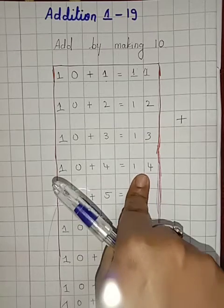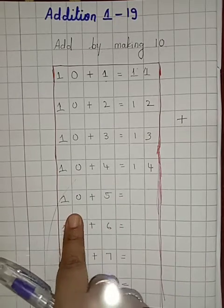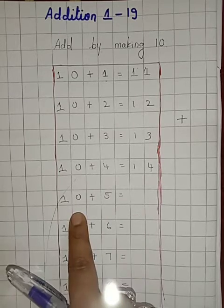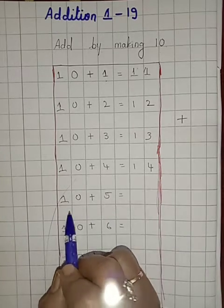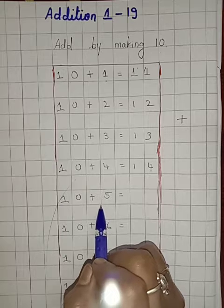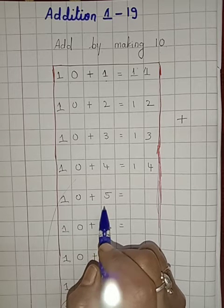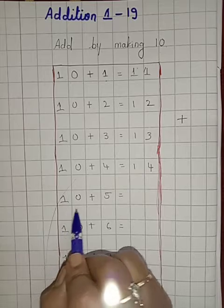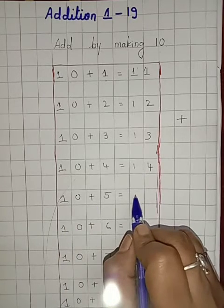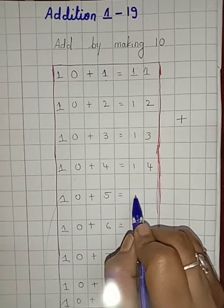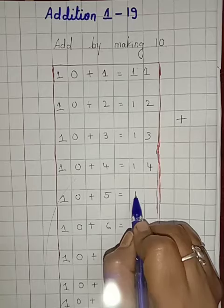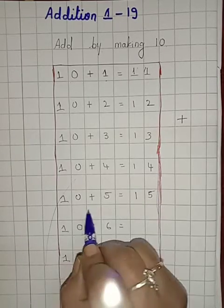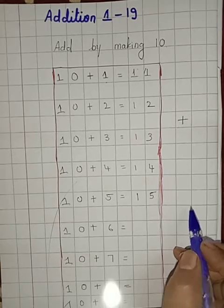Now children, you all have to tell me what will be the value of 10 plus 5. So here what is happening? There is 1 ten and how many ones are there? There are 5 ones. So 10 plus 5, what will be the value, children? What will be the sum? That is 15. 10 plus 5 is 15.